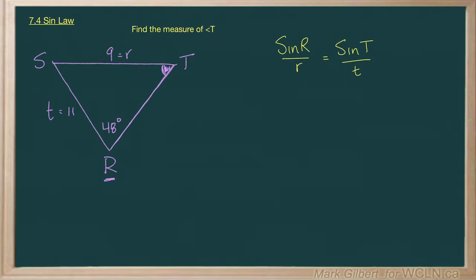Let's plug in what we know. So we know angle R, so let's put that in: sine 48. We know side r is 9. We want to find the sine of T, but we know side t is 11.